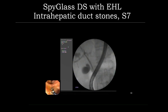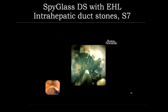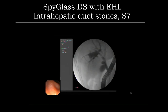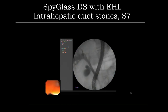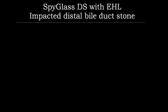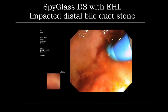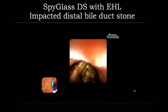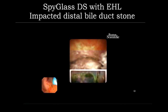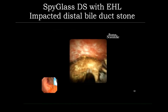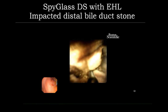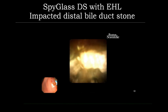Case scenario: intrahepatic stone — in this particular case, stone located at segment 7. We break the stone with ESL under SpyGlass DS and then remove the stone. For an impacted distal bile duct stone, insert the SpyScope just above the ampulla, adjust the tip, keep the ESL probe 5 mm from the tip, and break the stone under clear vision.